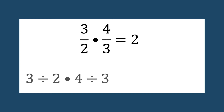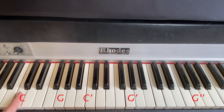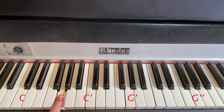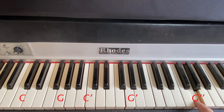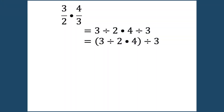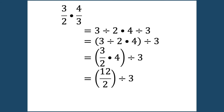We can use similar logic and write the left-hand side as three divided by two, times four divided by three. Musically, we can hear these in order: start at C, go up to the third harmonic by multiplying by three, then go down an octave by dividing by two, then go up two octaves by multiplying by four, and then go down a third harmonic by dividing by three. Thus, we can use our order of operations and group the division and multiplication as (three divided by two) times four, and then divided by three. We can rewrite this as the fraction three halves times four in parentheses, then divide that by three. Since we know how to multiply a fraction by an integer, three halves times four is just 12 halves, which simplifies to six. So six divided by three is two.